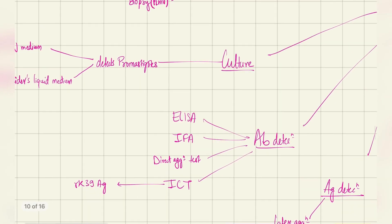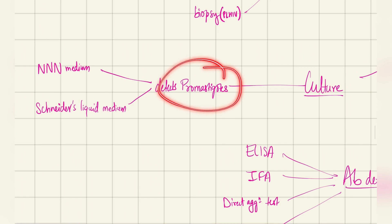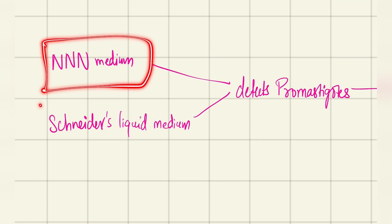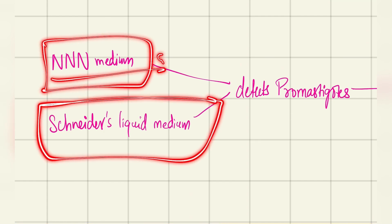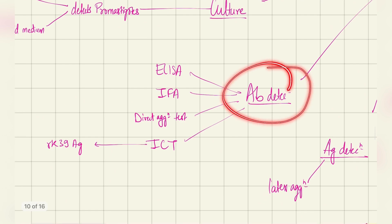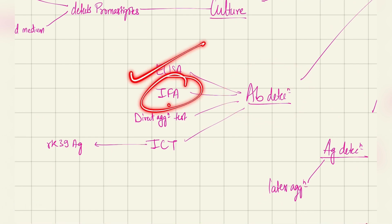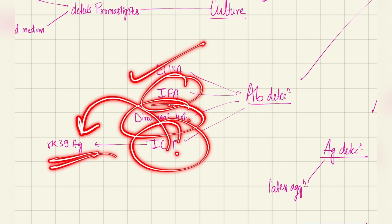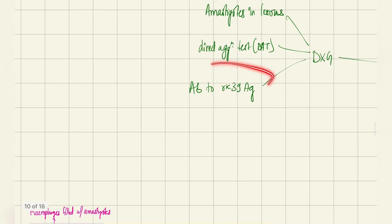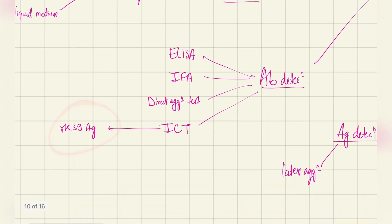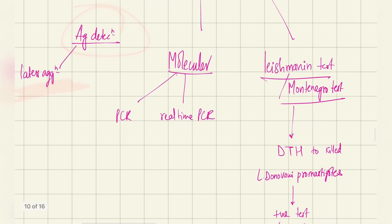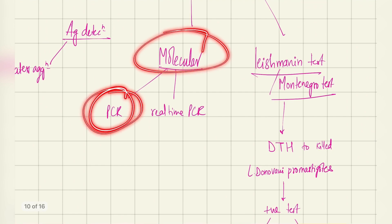Culture detects promastigotes, grown in NNN medium and Schneider's liquid medium — just remember those two names. Antibody detection uses ELISA, IFA (indirect fluorescent antibody testing), direct agglutination test, or immunochromatography testing (ICT), which detects the RK39 antigen. For antigen detection, a latex agglutination test is used. Molecularly, PCR and real-time PCR are employed.